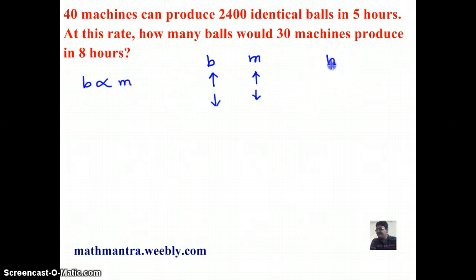Similarly, let's see the relation between the number of balls produced and the hours spent. If I increase the number of hours, the number of balls produced will increase. And if I decrease the number of hours, the production of balls will reduce, which means that the number of balls produced is directly proportional to the hours spent.